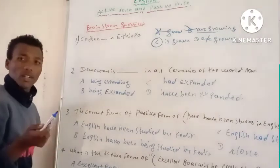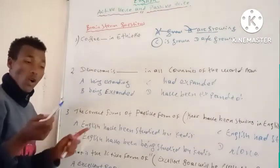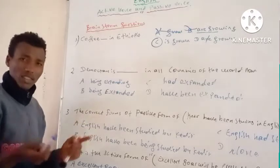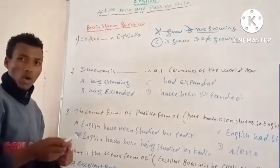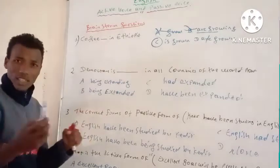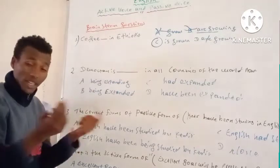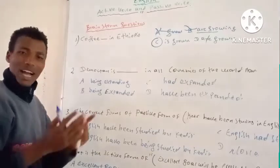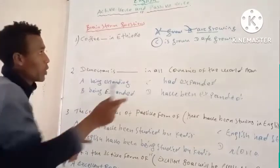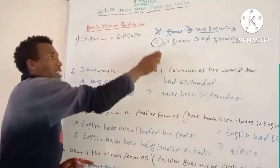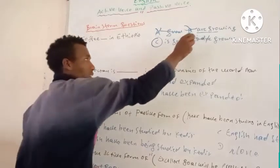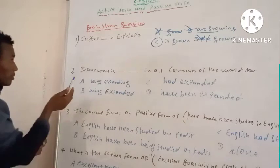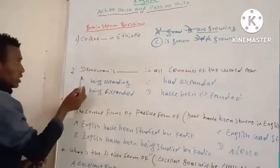Examples of uncountable nouns: water, oil, money — these are uncountable nouns. So 'is grown' is the correct answer for the first question. Now, second question.